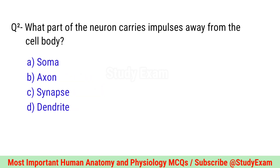Question number two. What part of the neuron carries impulses away from the cell body? Correct option is B. Axon.